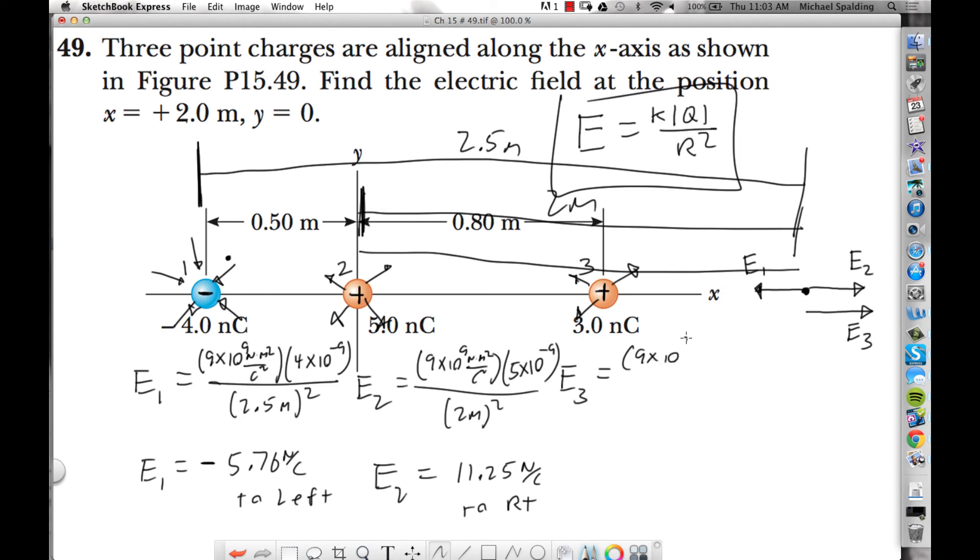E3, 9 times 10 to the 9th newton meter squared over Coulomb squared. Charge 3 is 3 times 10 to the negative 9 Coulombs. The distance here is 1.2 meters. Where did I get 1.2 from? Well, this is 0.8, that's 2. So 2 minus 0.8, that's got to be 1.2. So E3 comes out as 18.75 newtons per Coulomb to the right.